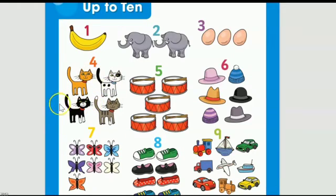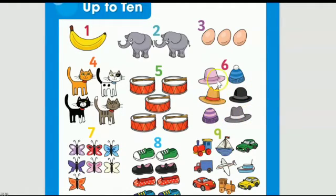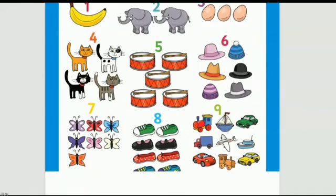Yes, there are four cats. We have written four here. Moving on to drums — how many drums are there? One, two, three, four, five — yes, there are five drums, so we write five. Now, how many hats are there? One, two, three, four, five, six — very good, there are six hats, so we write six.